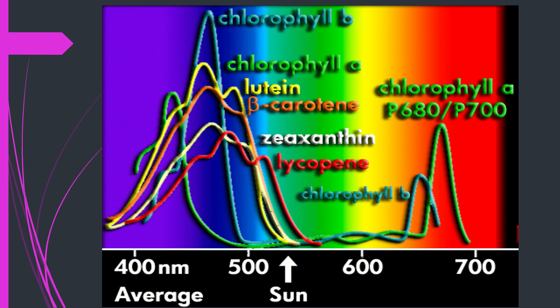From this picture you can understand the different absorption spectra of the various pigments studied. We can see the absorption spectra of chlorophyll A, chlorophyll B, beta-carotene, xanthine, zeaxanthin, lycopene, and others. Every peak shown here denotes their respective absorption spectra.